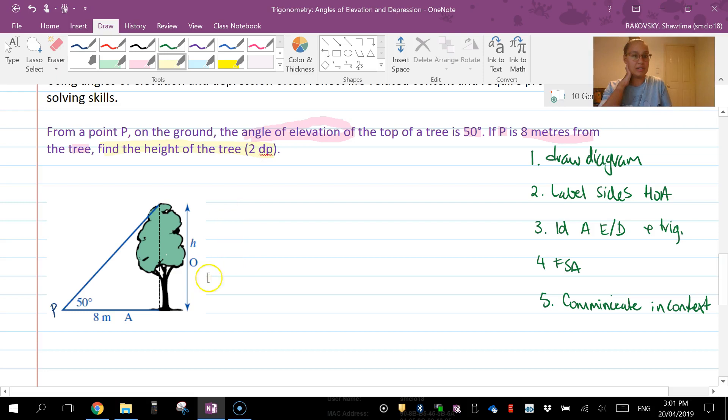First of all, if I didn't have a diagram I would be drawing that. We're going to make an assumption that the tree is at 90 degrees to the ground, otherwise this wouldn't work. And we are going to then assign our hypotenuse, adjacent, opposite. I don't like the idea that they've used an H here when this is a hypotenuse, so I'm going to call this T for tree.